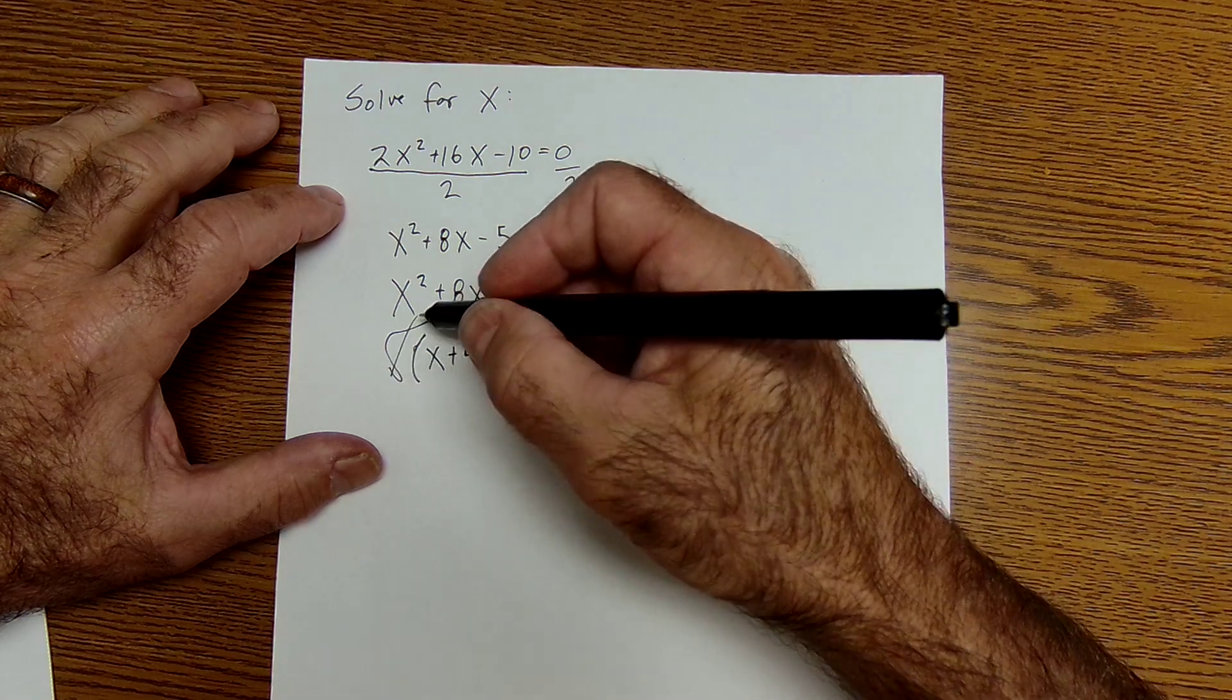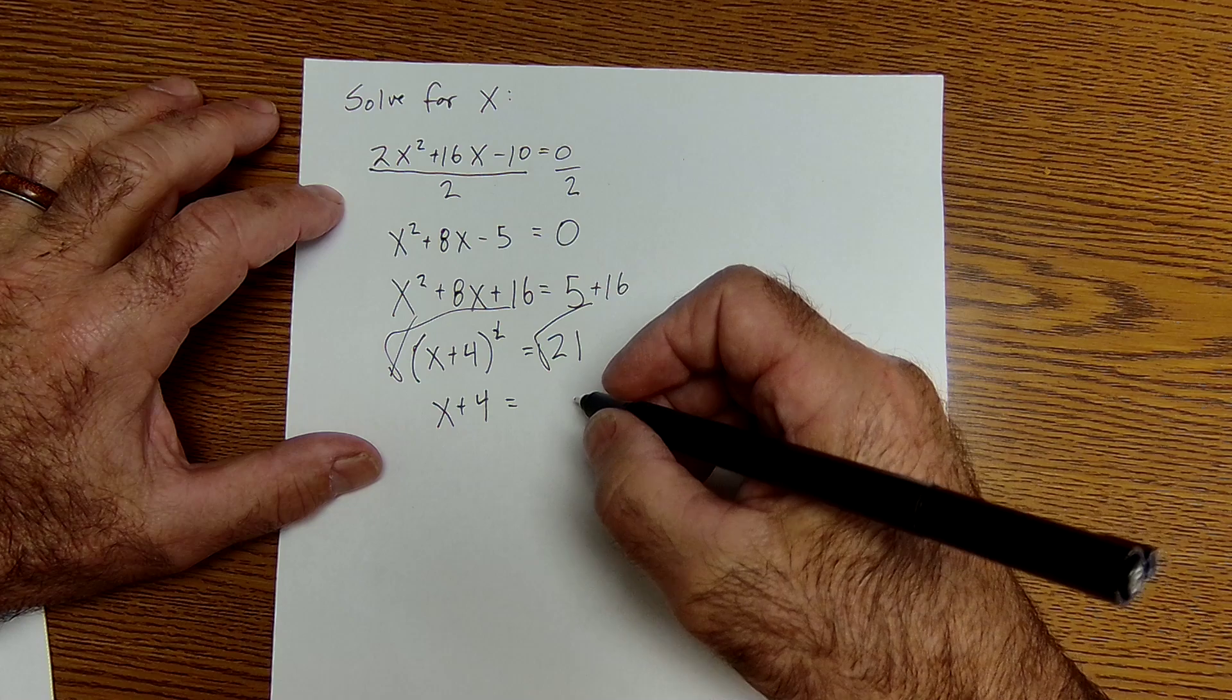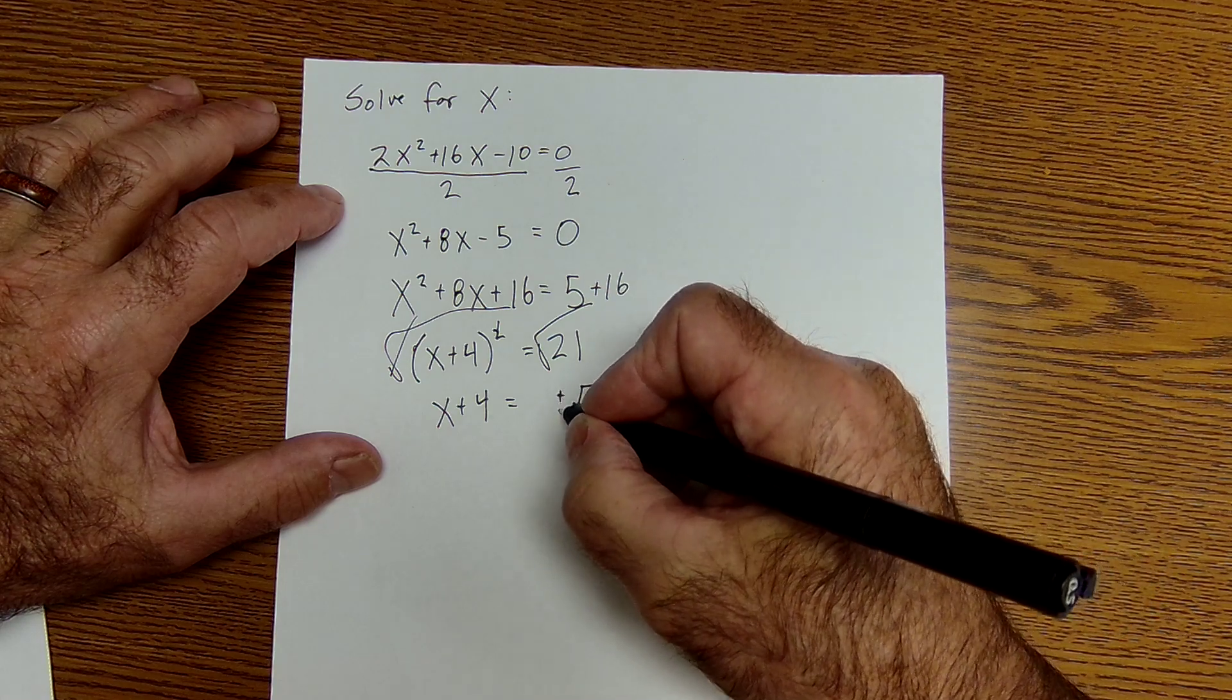Square and square root cancel. That gives me X plus 4 equals the square root of 21, remembering that it's both positive and negative.